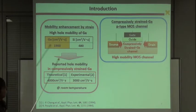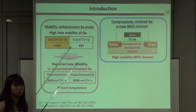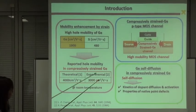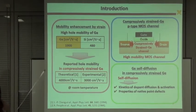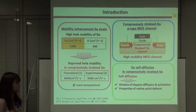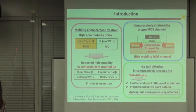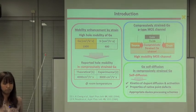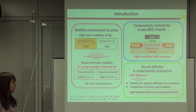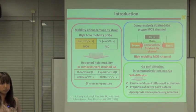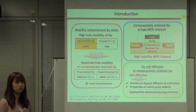To use for high mobility channel P-type MOS transistors. In germanium, self-diffusion in compressive strained germanium is important for the development of strained germanium-based MOS technology, because the study of self-diffusion leads to understand kinetics of dopant diffusion and activation, and also to understand properties of native point defects, which are essential to design appropriate device processing schemes.